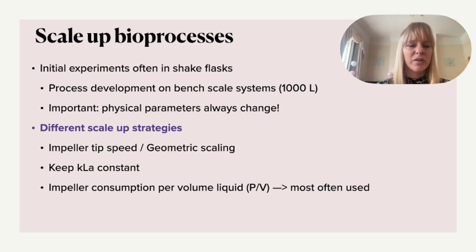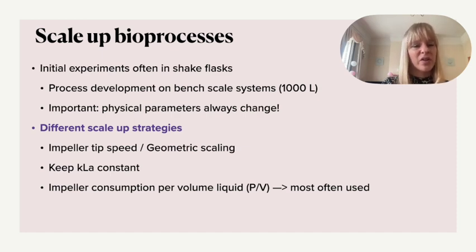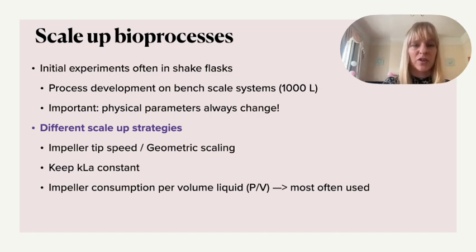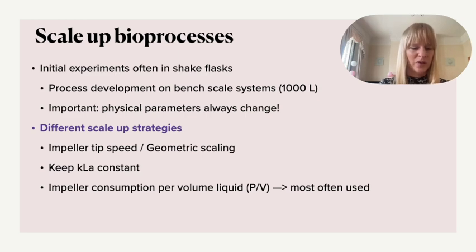To identify critical process parameters, you would do initial experiments in very small well plates or shake flasks — for example, examining the influence of pH and temperature. Before going to the full-scale system, you want pilot scale data at the process development stage, looking at hundreds of thousands of liters. Here you develop models and examine what happens, particularly with oxygen transfer, which changes significantly going from a shake flask to a bench-scale system.